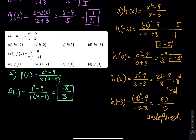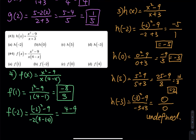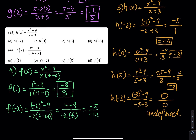And then f of negative 2: we have negative 2 squared minus 9 divided by negative 2 times 4 minus negative 2, which will be 4 plus 2. So the top is 4 minus 9, which is negative 5. The bottom is negative 2 times 6, which is negative 12. So simplify that: the answer is 5 over 12.